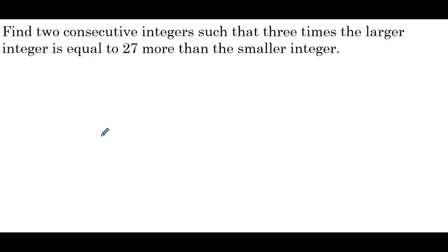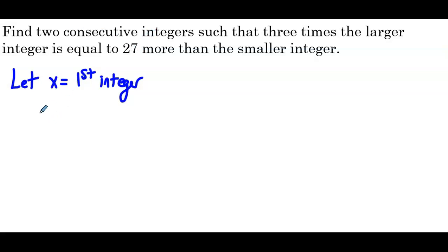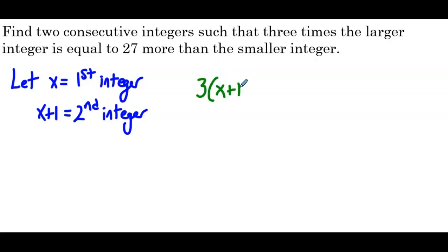Find 2 consecutive integers such that 3 times the larger integer is equal to 27 more than the smaller integer. Let's start with our let statement: let x equal the first integer. Since they're just consecutive, not even or odd, then x plus 1 equals the second integer. Now we translate the word problem: 3 times the larger — x plus 1 is the larger integer — is equal to 27 more than the smaller integer x, so that's x plus 27.